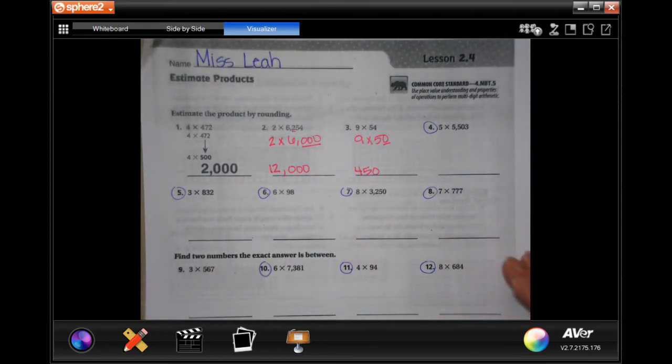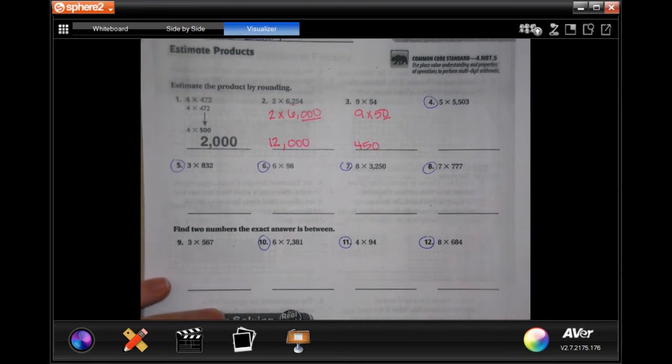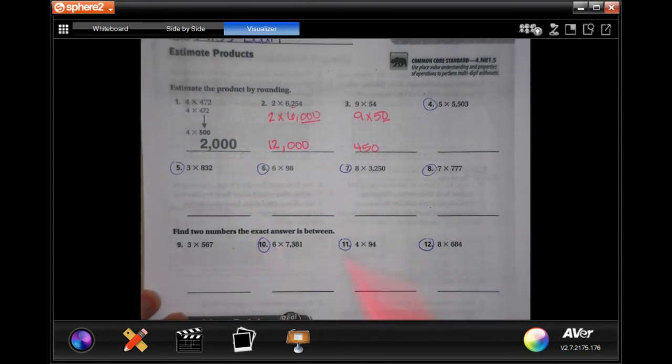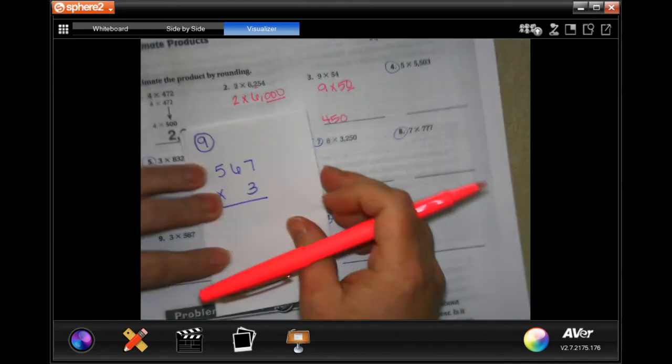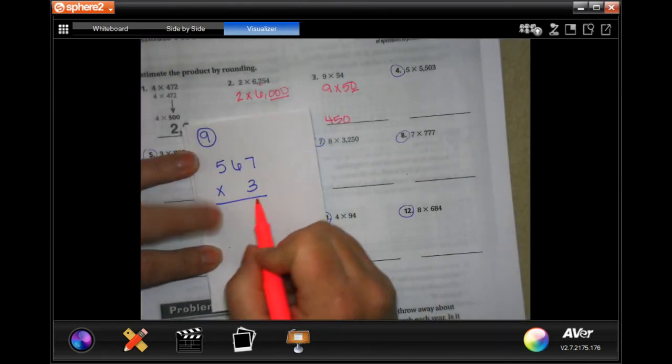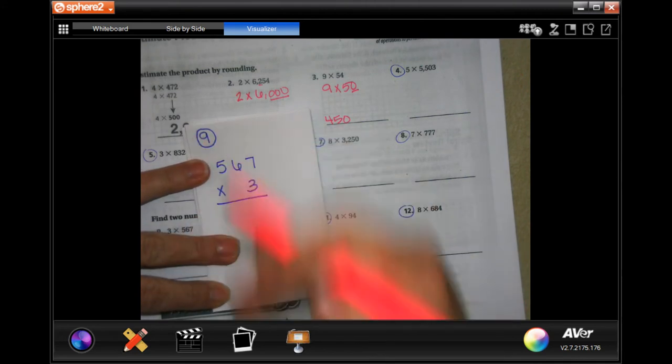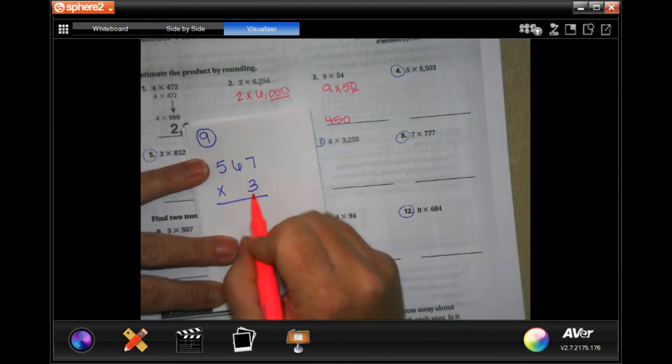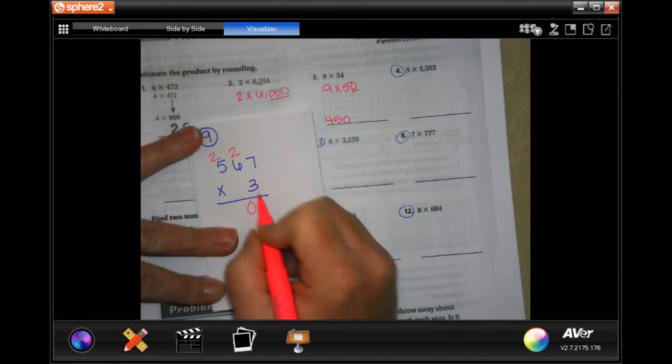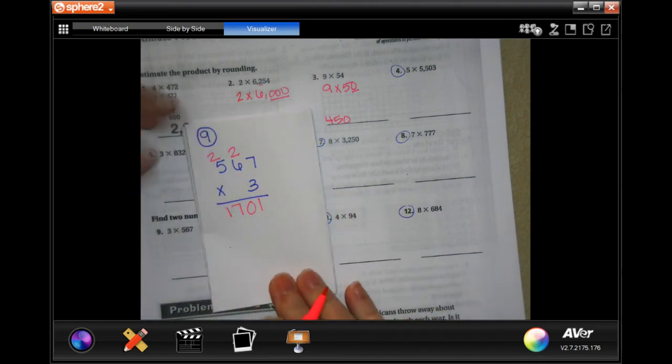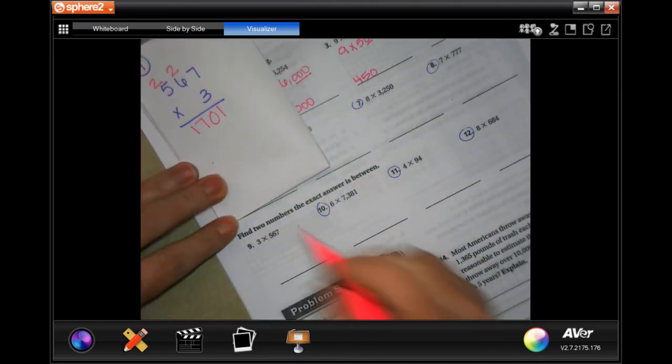All right, we are going to go to number nine. It says to find two numbers if the exact number is between. So what I did is I wrote down on a separate piece of paper the exact problem, and then we're going to do an estimate on either side of it. So three times seven is 21, carry your two. Three times six is 18, plus two more is 20, carry your two.